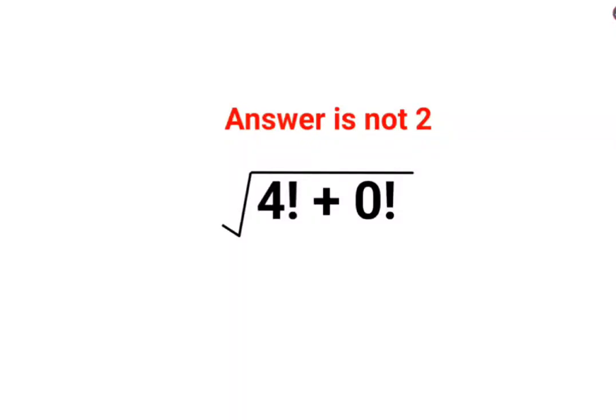Welcome everyone. So yes, we need to find root of 4 factorial plus 0 factorial and literally everybody thought that the answer for this one is supposed to be 2.